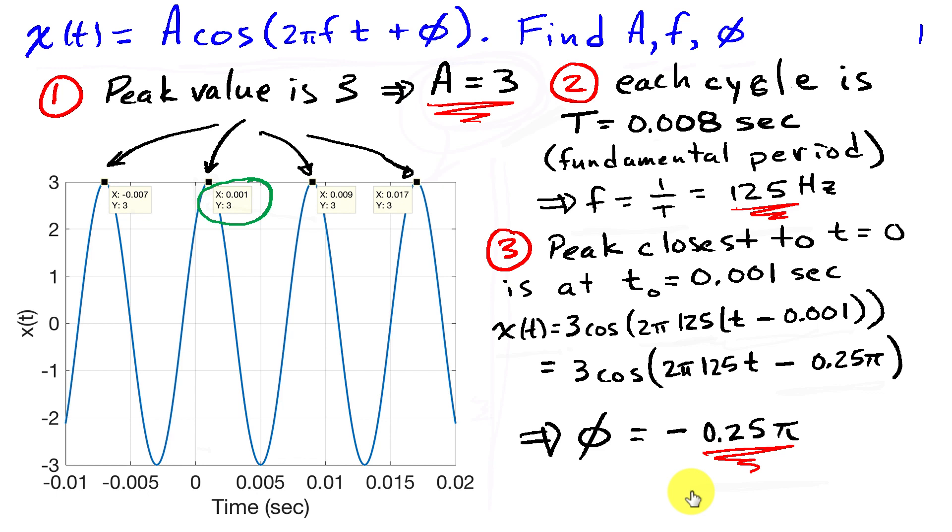So there's our three parameters that we've identified from the graph. We get the peak amplitude, or the amplitude from the peak value of the sinusoid. We find the period, or the length of one cycle, and that gives us the frequency. Once we know the frequency, we can use the time by which the cosine is shifted from zero. In this case, it's 0.001 seconds to the right. We can use that time shift and the frequency to find the phase.